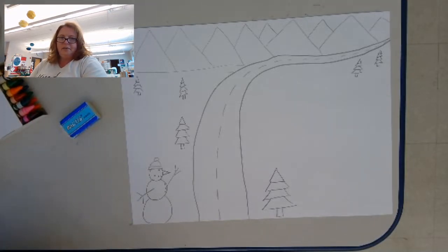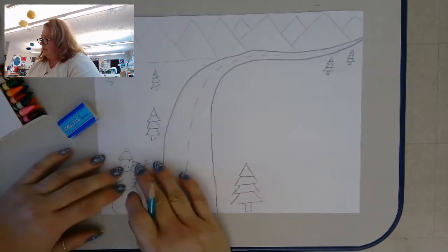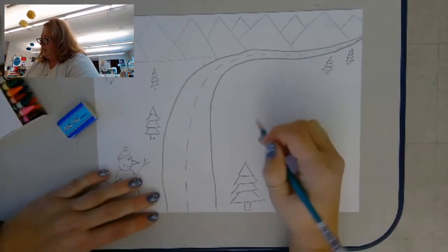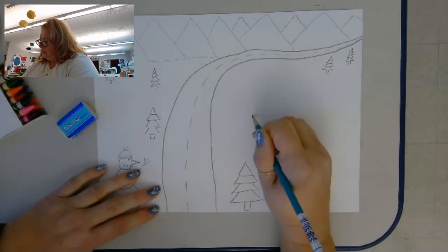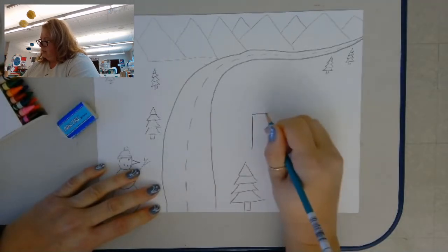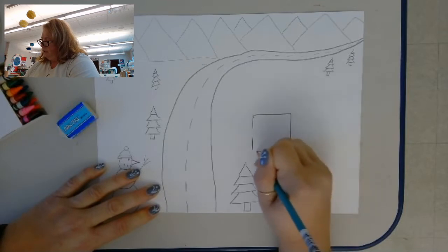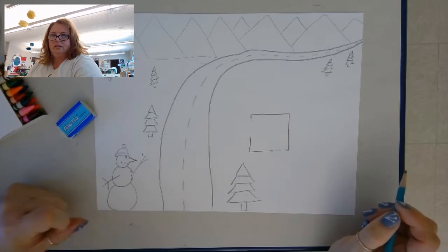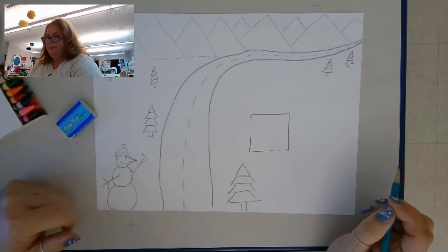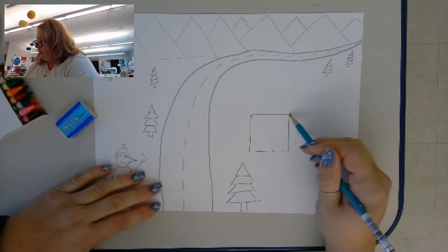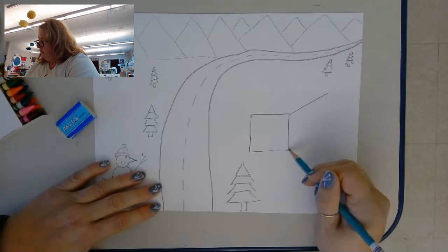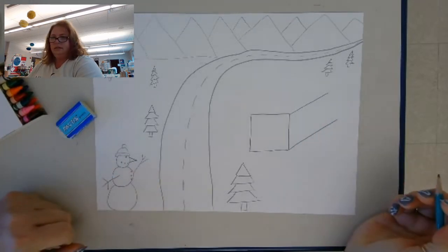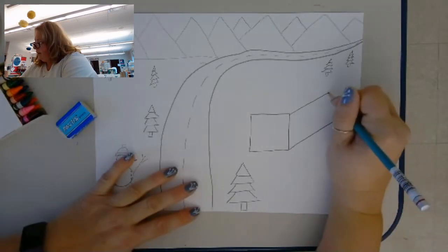Now the house is going to be the trickiest part to draw. So I'm going to start with a square shape or a rectangle shape. And then I'm going to draw two lines that go back. They're kind of slanted. And then a line to connect them.